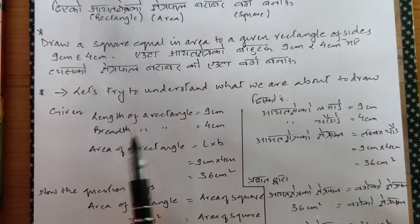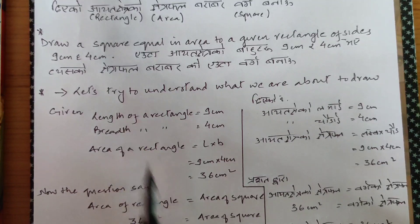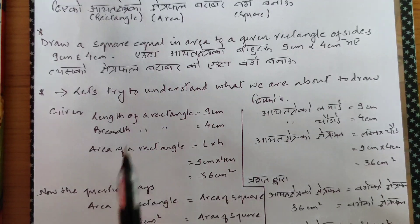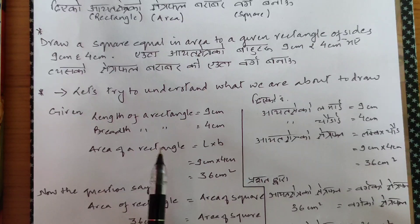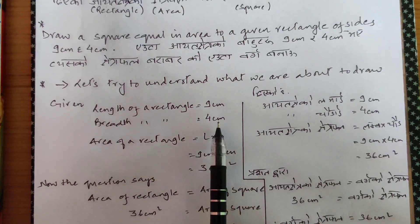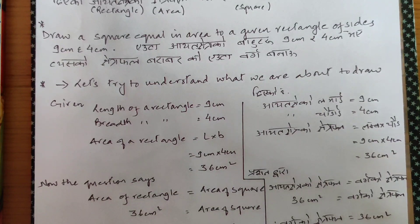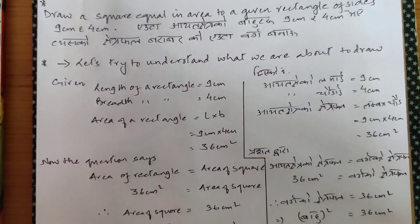You don't need to show this in the exams, but you need to understand it. So let's understand it at least for the first diagram. What is given to us: length of the rectangle is nine centimeter, breadth is four centimeter. The area of the rectangle — formula is length into breadth — so it's nine centimeter into four centimeter, which gives us 36 centimeter square.